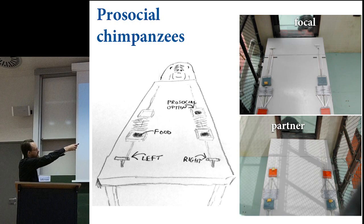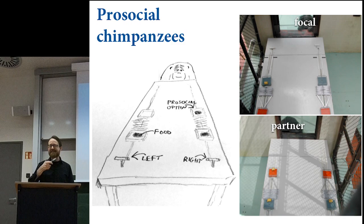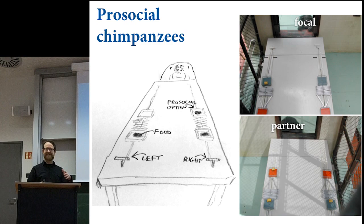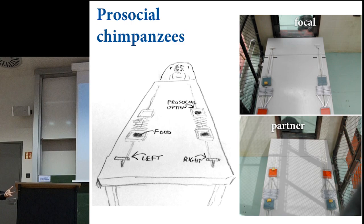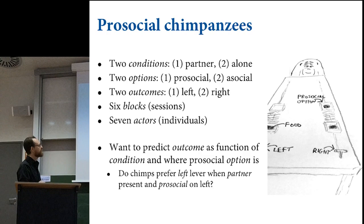The major treatment is that sometimes there's no chimpanzee on the other end—you're in the room by yourself. Two conditions: partner and alone. The outcome is which lever you pull. There are six experimental blocks or sessions, which in this case are mornings on which experiments were done. We care about block effects because things like weather could affect results—time correlations in experiments are a big deal. There are seven actors or individuals, and we're going to focus on blocks and actors as the things we want to cluster on.